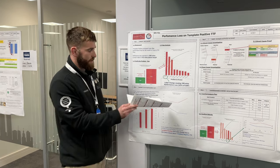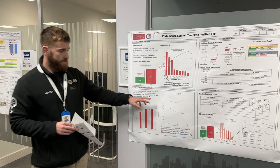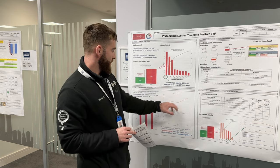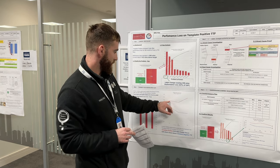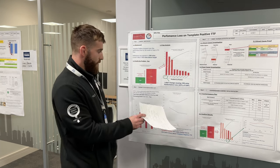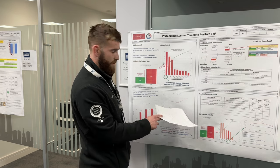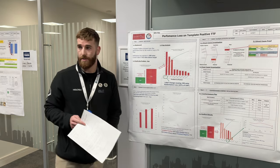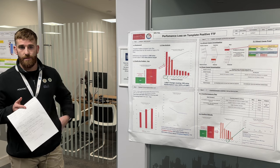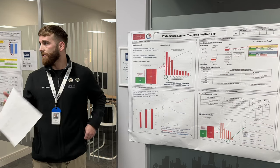We compared the template positive line with the template negative line. It was interesting to see that the positive line was trending upwards from just under three minutes, increasing to over four minutes, whereas the template negative line in blue was reducing down, averaging about two minutes for changeover. Both lines are exactly the same equipment, so it was interesting seeing one performing at four minutes and the other at two minutes.